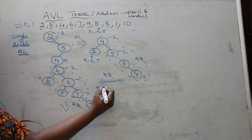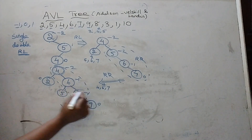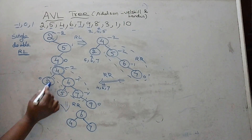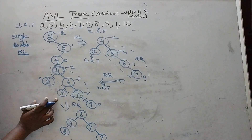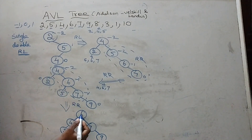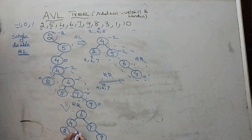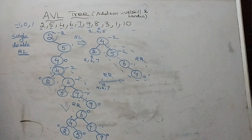To apply the rotation, we arrange the three elements 4, 6, 7. The middle element is 6, so 6 becomes the root node, with 4 as the left child and 7 as the right child. Node 2 is the left child of 4, and 9 is the right child of 7. Node 5 is placed as the right child of 4 since it is greater than 4 but less than 6. After recalculating balance factor values, the tree is balanced.